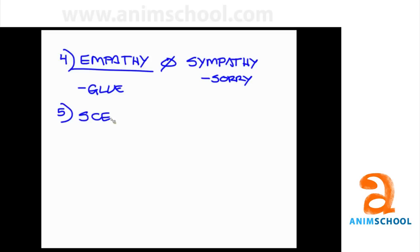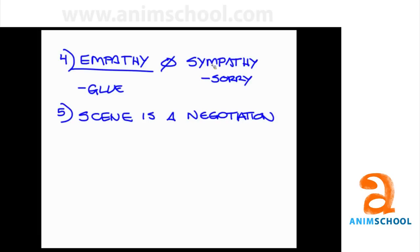From the Acting for Animators book: a scene is a negotiation. What does that mean? A character is pursuing something and something is getting in their way. There's always going to be an element of want, a goal, and then a barrier between that. So the negotiation is: a barrier comes up in front of the character — what do they do to try and get to their goal? Should they go left or should they go right?